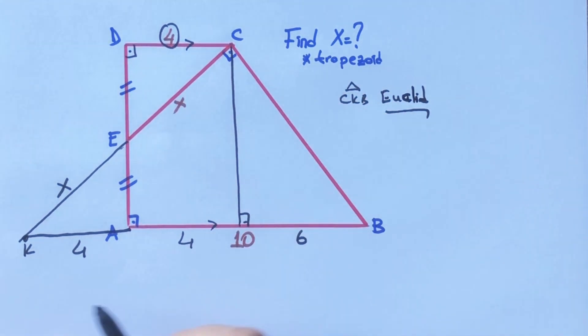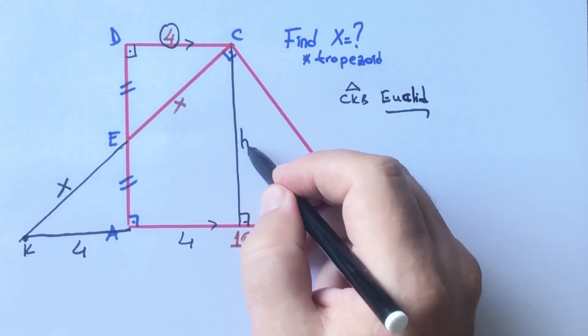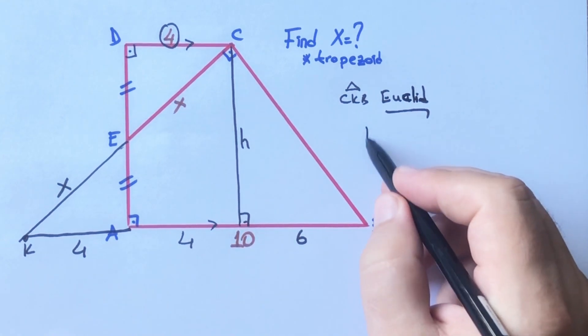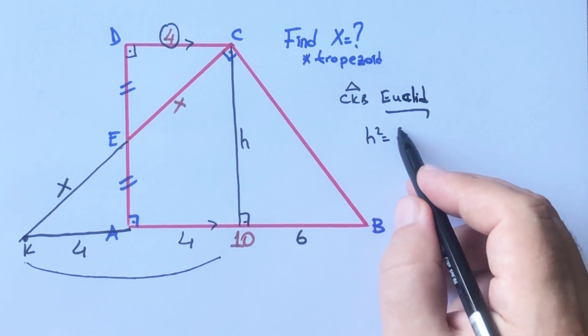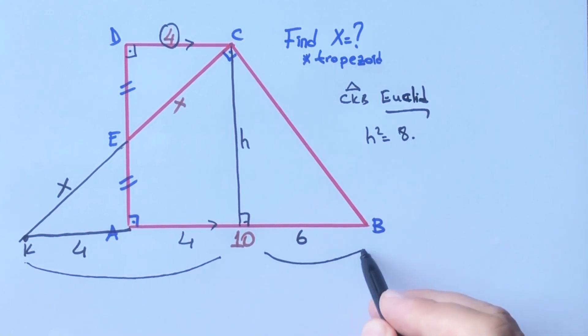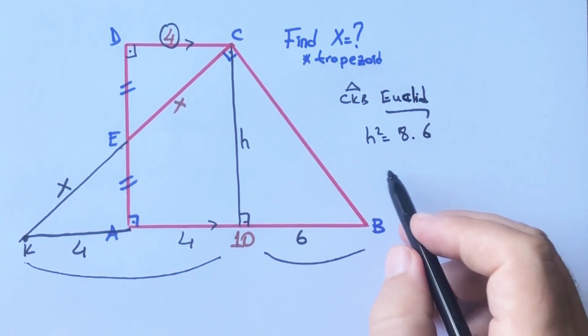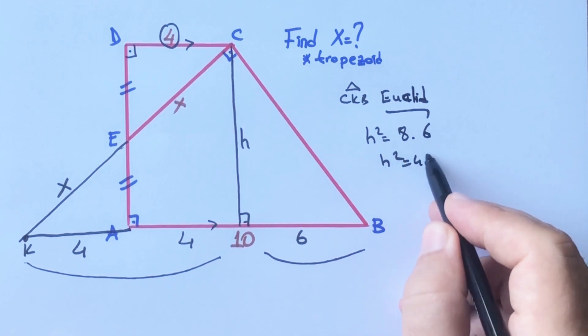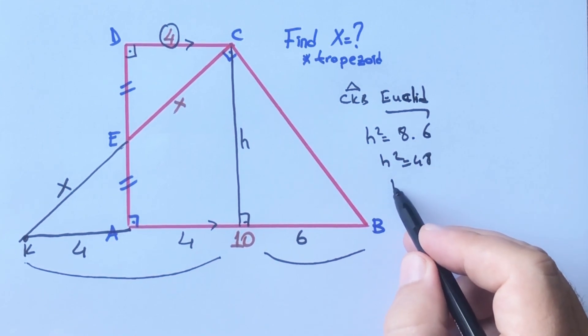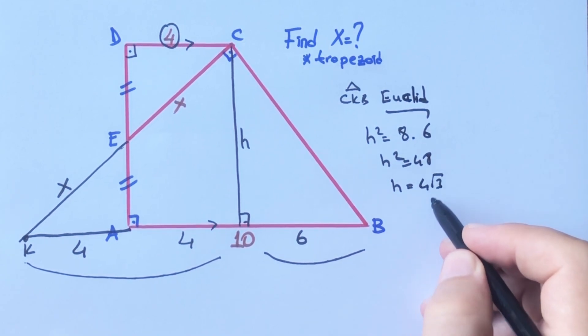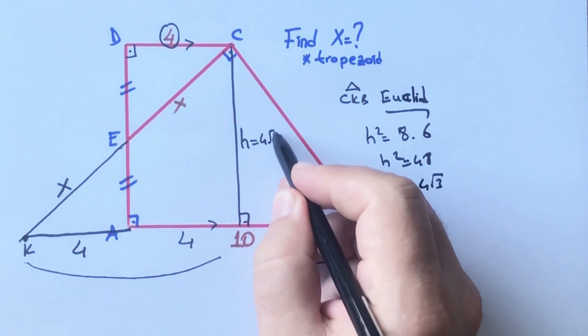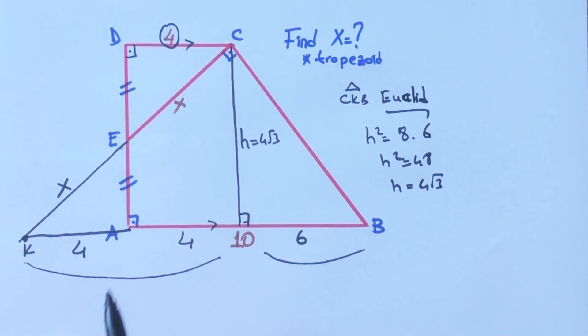The square of this length must be equal - let's call here h. h² equals this part, 8 times this part. Therefore h² = 48, h = 4√3 units.